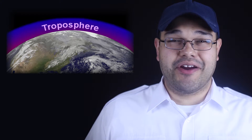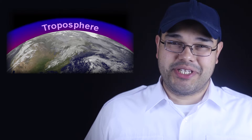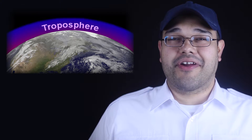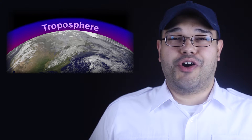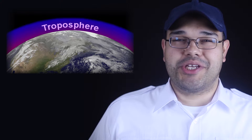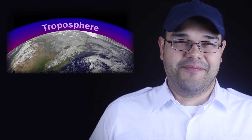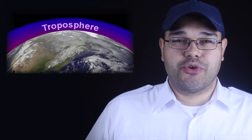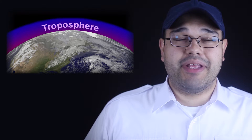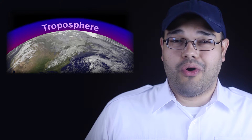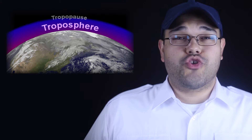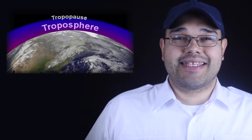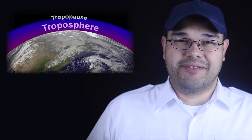The first layer of the atmosphere, the one we're most interested in, is the troposphere. Almost all weather and almost all flight operations occur in the troposphere. Within the troposphere, temperature decreases with height, a fact that plays an important role in weather generation. The troposphere starts at the surface and extends upward to the tropopause.